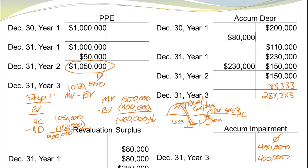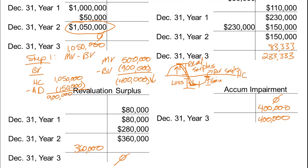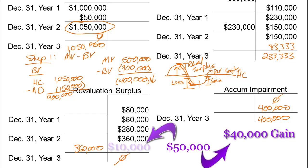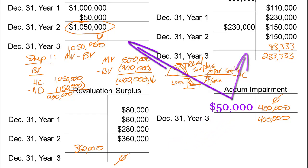If we go into the new year and the value goes back up again, I could record up to $40,000 as a gain — no more than that. So if the value went back up by $50,000, I could record $40,000 as a gain and the rest would go to revaluation surplus, taking it all out of the accumulated impairment without touching accumulated depreciation or the PP&E account.